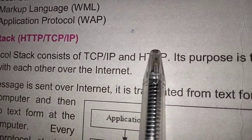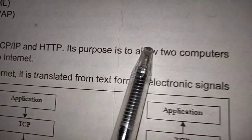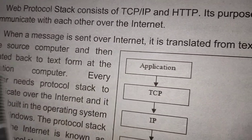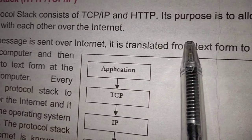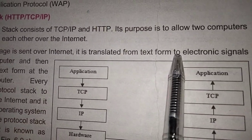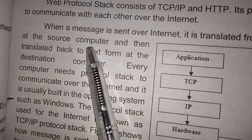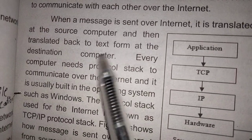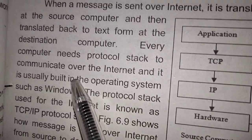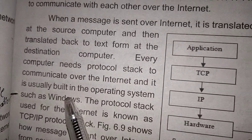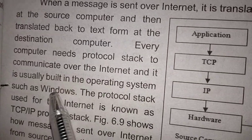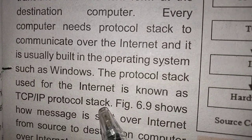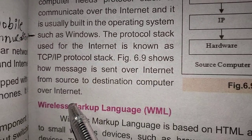The web protocol stack consists of TCP/IP and HTTP. Its purpose is to allow two computers to communicate with each other over the internet. When a message is sent over the internet, it is translated from text form to electronic signals at the source computer and then translated back to text form at the destination computer. Every computer needs a protocol stack to communicate over the internet, and it is usually built into the operating system such as Windows. The protocol stack used for the internet is known as the TCP/IP protocol stack.